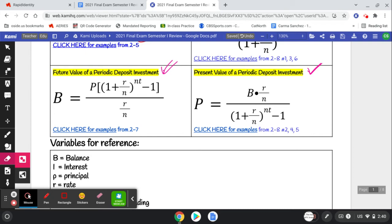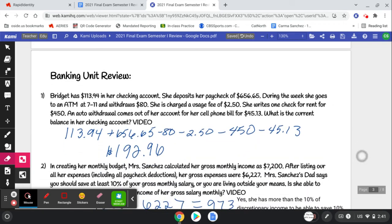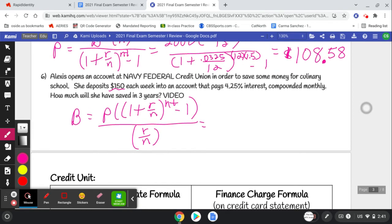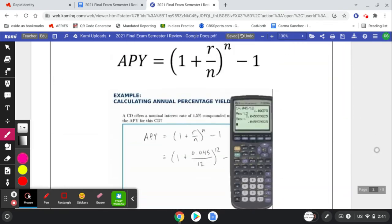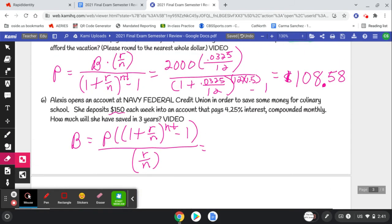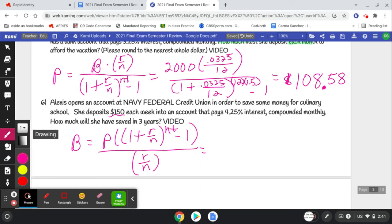P stands for principal of the periodic deposit amount. Double check our formula: P times 1 plus the rate over N to the power of NT minus 1 all over the rate over N. Looking good. We put in our principal amount. We know we're going to be able to deposit $150 each month, 1 plus the rate compounded monthly to the power of monthly compounding times three years all over the rate over 12.